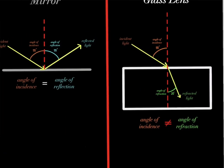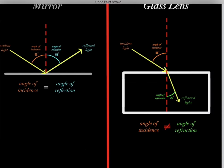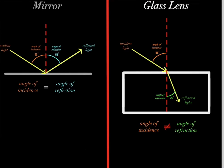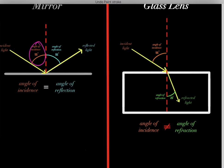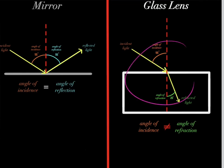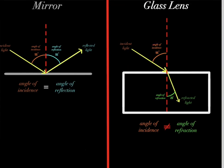Notice that this angle of incidence does not equal the angle of refraction. That is counter to reflection, where the angle of incidence always equals the angle of reflection. In refraction, the angle of incidence usually does not equal the angle of refraction. This is generally the case, with a few rare exceptions, but in most situations these angles will not be equal.